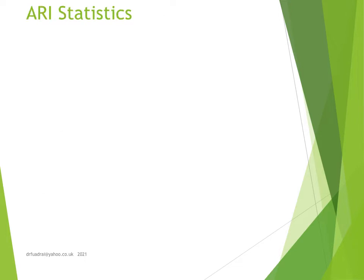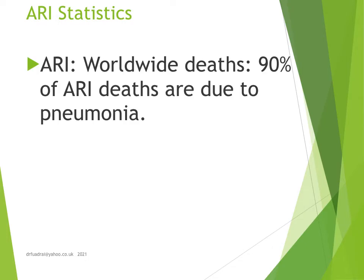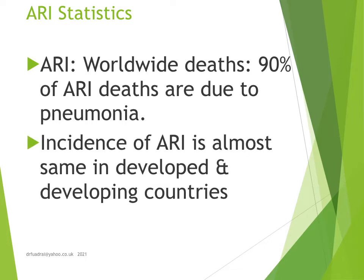A little bit about acute respiratory infection statistics: worldwide, 90% of ARI deaths are due to pneumonia, usually of bacterial origin. The incidence of ARI is the same in developed and developing countries; however, the incidence of pneumonia is 3 to 4% in developed countries, whereas it is 20 to 30% in developing countries. The difference is due to prevalence of malnutrition, low birth weight, and indoor air pollution in developing countries. In children below 5 years, 5 episodes of ARI occur per child per year. ARI is responsible for 30 to 50% of visits to health facilities and 20 to 40% of hospital admissions.